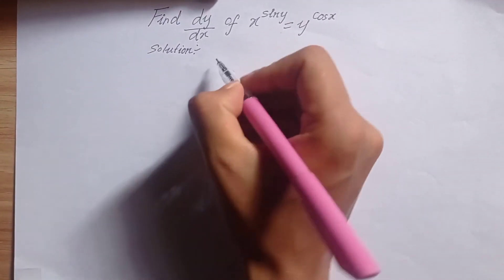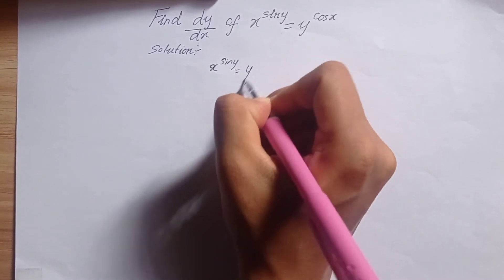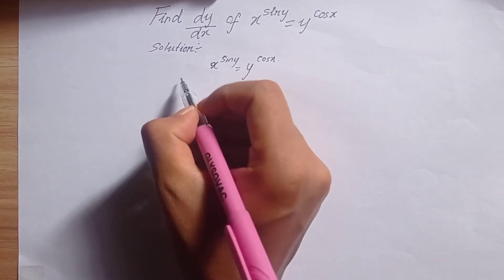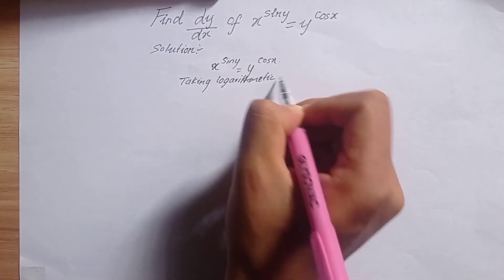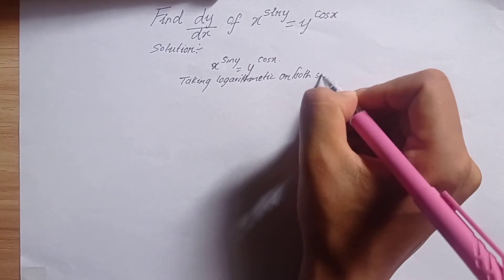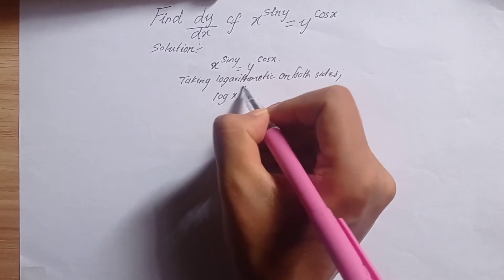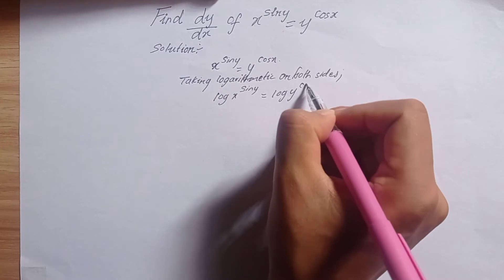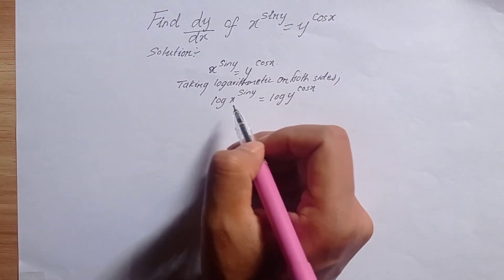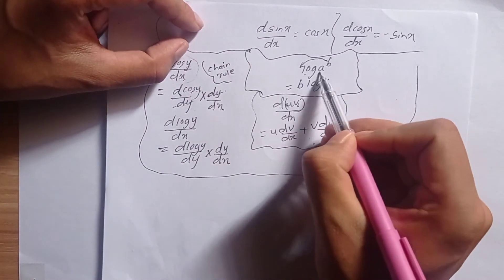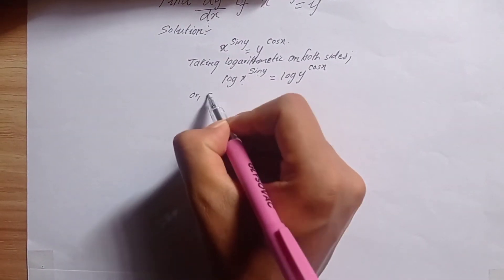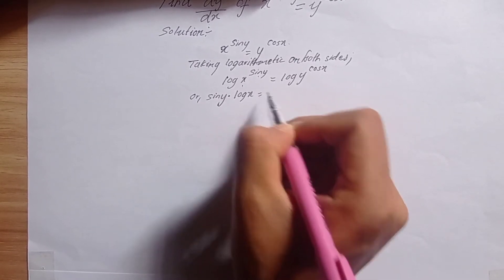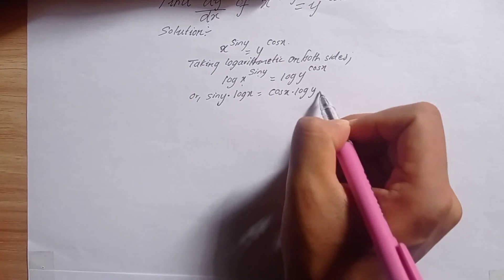So the question is: x to the power sin y is equal to y to the power cos x. Taking logarithm on both sides: log of x to the power sin y equals log of y to the power cos x. Using the log power rule, this becomes sin y times log x equals cos x times log y.